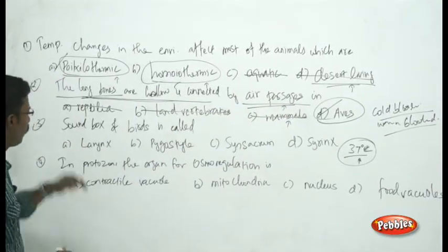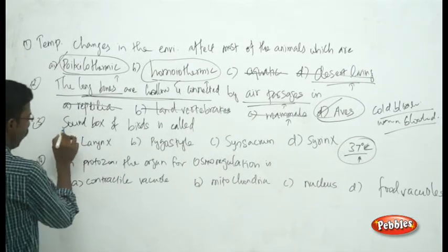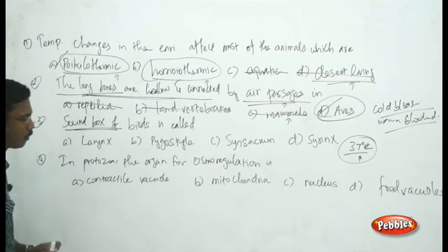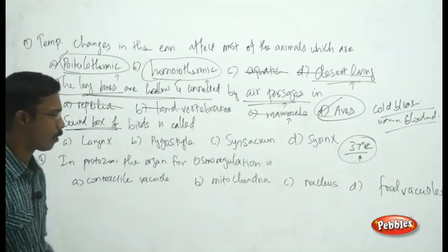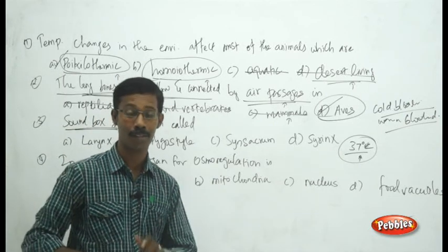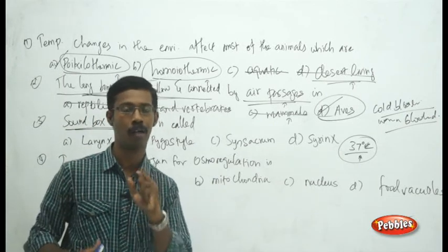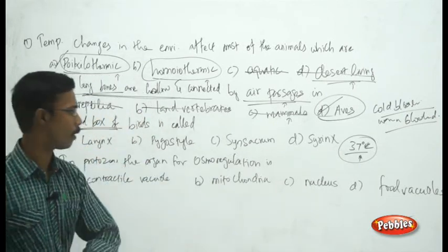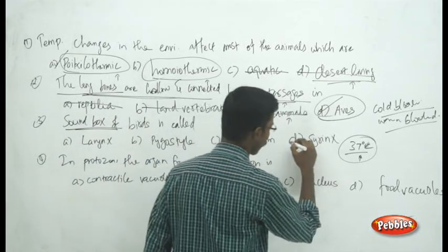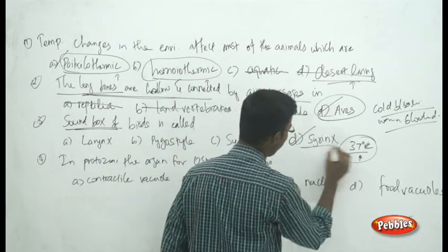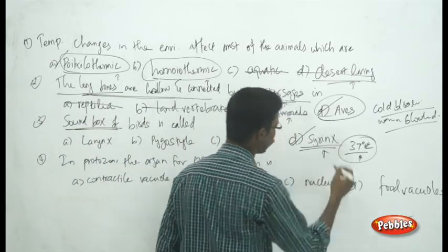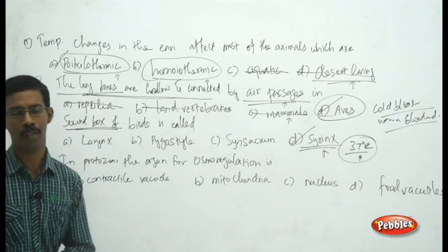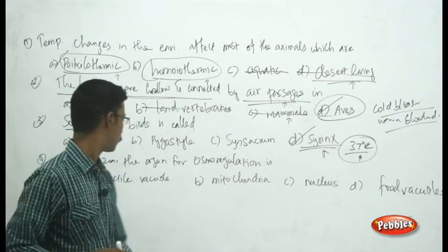See the next question — this is a direct question: the sound box of birds is called... The sound-producing organ or structure present in birds is called the syrinx. This is how birds produce sound.